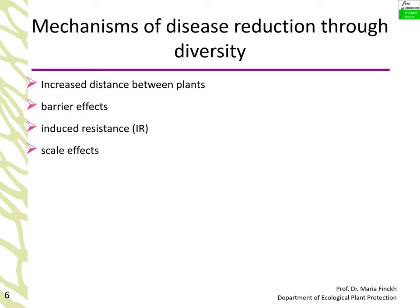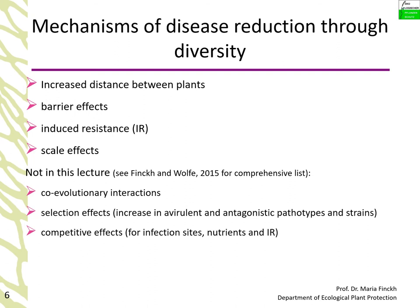When thinking about mechanisms of disease reduction through diversity, several have been identified. The commonly known ones include increased distance between plants of the same resistance type, barrier effects, induced resistance, and scale effects — all of which will be illustrated. Not covered in this lecture are co-evolutionary interactions (pathogen adaptation to hosts over time), selection effects (increases in avirulent and antagonistic pathotypes), and competitive effects among pathogen strains.